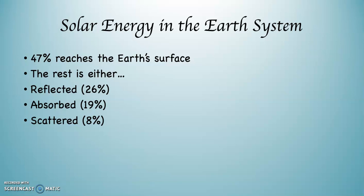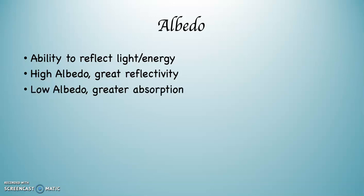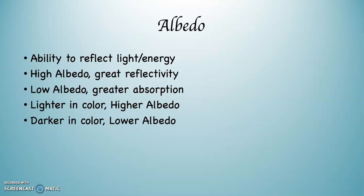The rest is also important: it's reflected, absorbed, or scattered. The ability of something to reflect light energy — in other words, this energy coming from the Sun — is called its albedo. If something has a high albedo, it has a great ability to reflect light. If something has a low albedo, it has a great ability to absorb light. In a practical sense, the lighter in color something is — the closer it is to white — the higher the albedo. And the darker in color something is, the lower its albedo, meaning the greater its ability to absorb light.